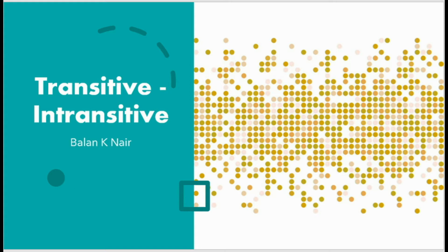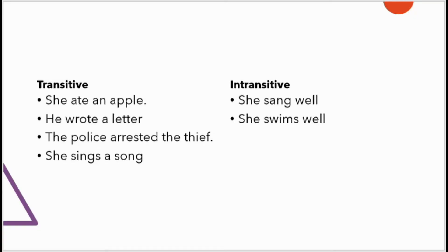A transitive verb is a verb with a direct object. For instance, 'she ate an apple' — what did she eat? An apple. 'He wrote a letter' — what did he write? A letter. 'The police arrested the thief' — who did the police arrest? The thief.